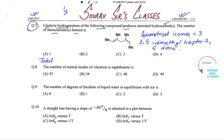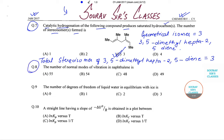The total stereoisomer of 3,5-dimethyl hepta-2,5-diyne is 3, so the correct answer will be option number C. Now question number eight says we need to comment on the number of normal modes of vibration in naphthalene.